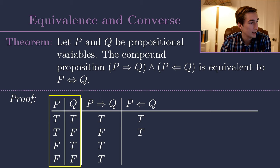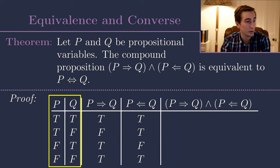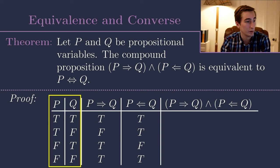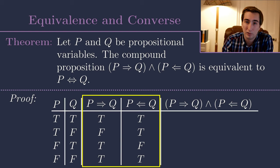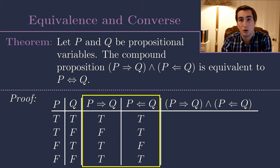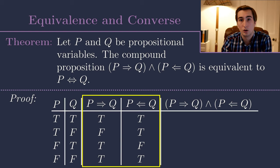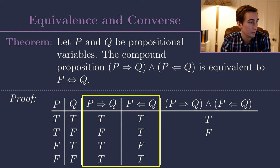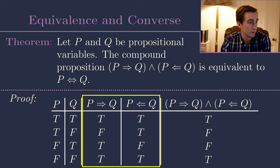The converse q implies p takes true/true to true, true/false to true, false/true to false, and false/false to true. Now for the conjunction (p implies q) AND (q implies p), the AND operator is only true when both columns are true. Row 1: true and true maps to true. Row 2: false and true maps to false. Row 3: true and false maps to false. Row 4: true and true maps to true. So the truth values of this conjunction are: true, false, false, true.